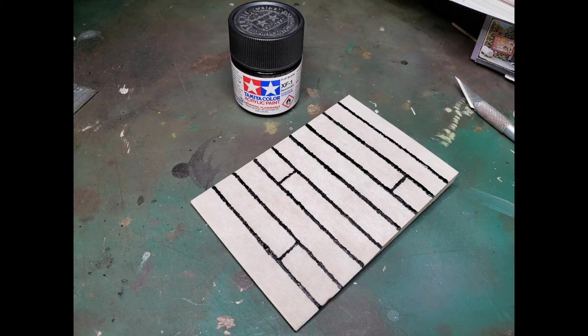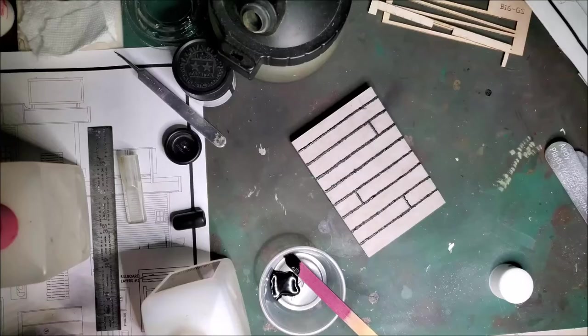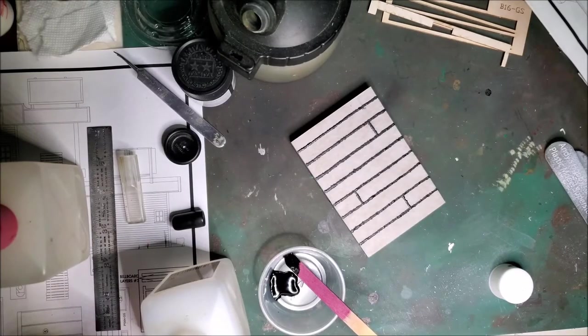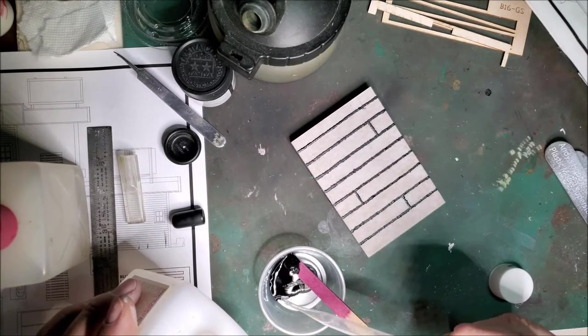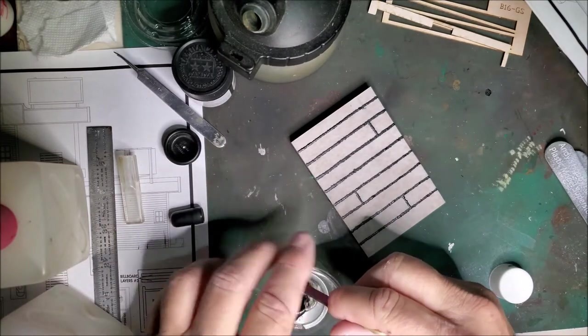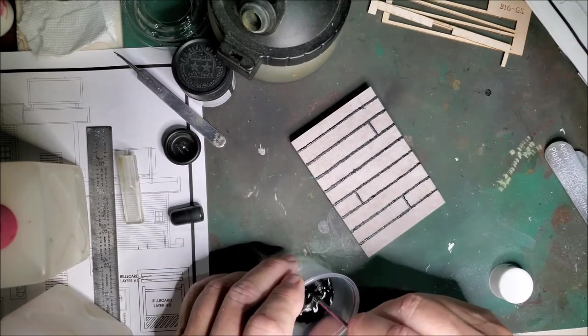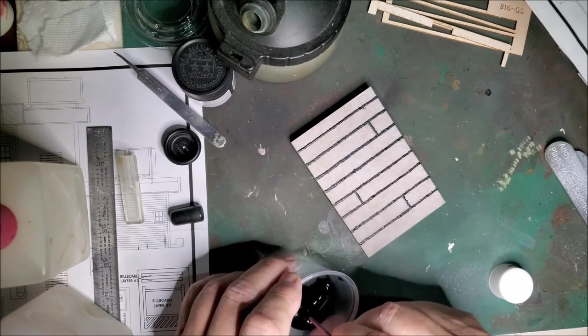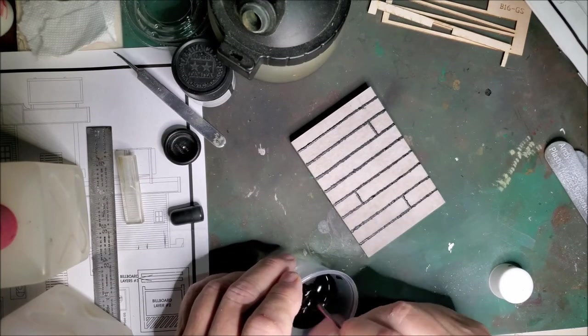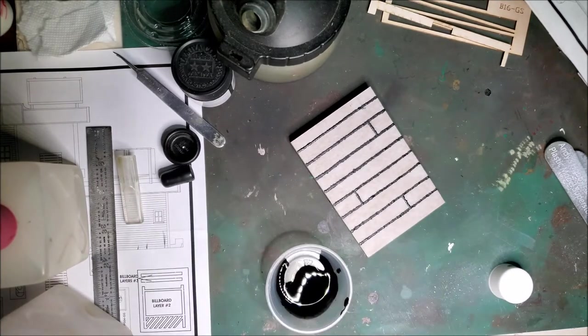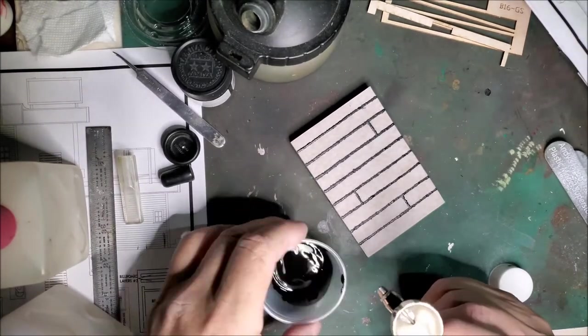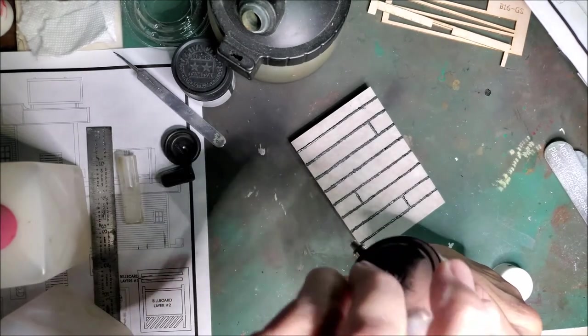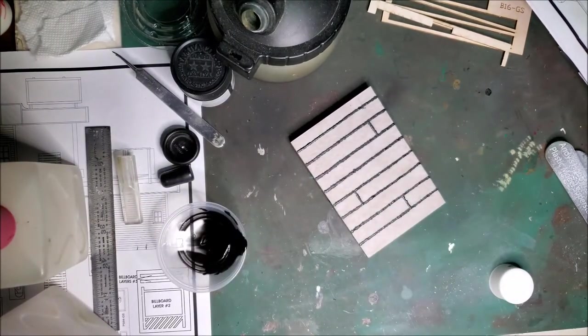I added tar seams to the roofing material using Tamiya acrylic paint and a paint brush. Waited till the tar seams were dry and then I painted the rest of the roof with the same paint, the flat black Tamiya acrylic paint. I probably could have used a brush to do this and it would have turned out fine, but I ended up using my airbrush.